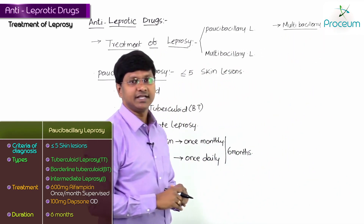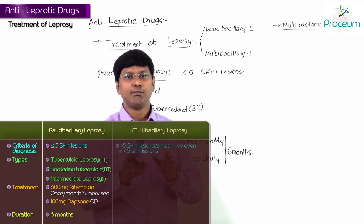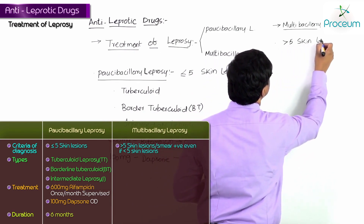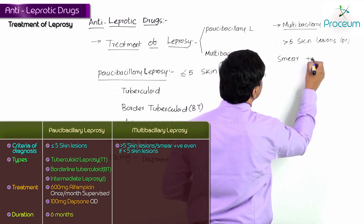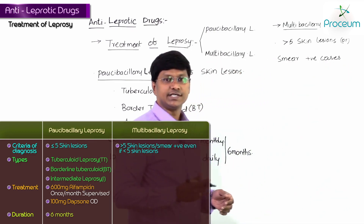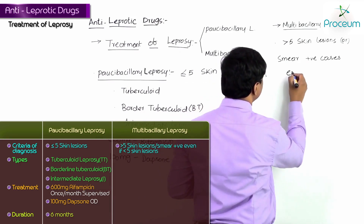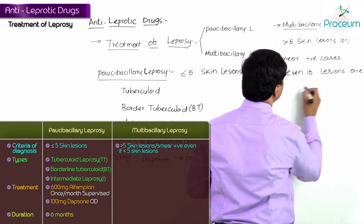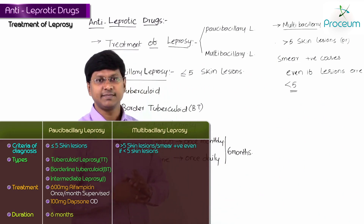Now for multibacillary leprosy — multibacillary leprosy includes leprosy with more than five skin lesions, or smear positive cases, even if the lesions are less than five in number.